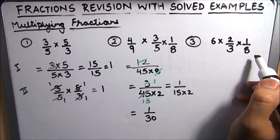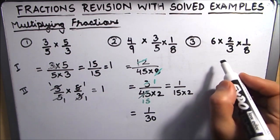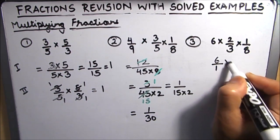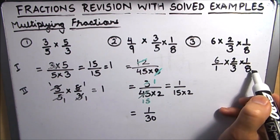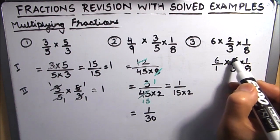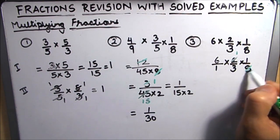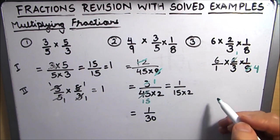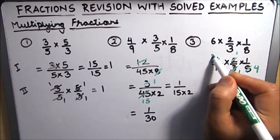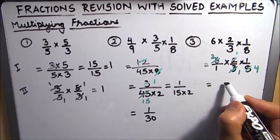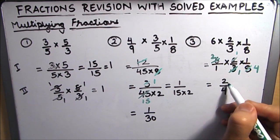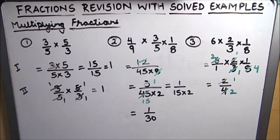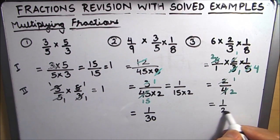In the next example, we can write 6 as 6 over 1, giving us 6 over 1 times 2 over 3 times 1 over 8. Here 2 and 8 share a common factor of 2, so 2 becomes 1 and 8 becomes 4. Also 3 and 6 share a common factor of 3, so 3 becomes 1 and 6 becomes 2. After cancelling we get 2 over 4, which can be further reduced to 1 over 2. This is how you multiply fractions.